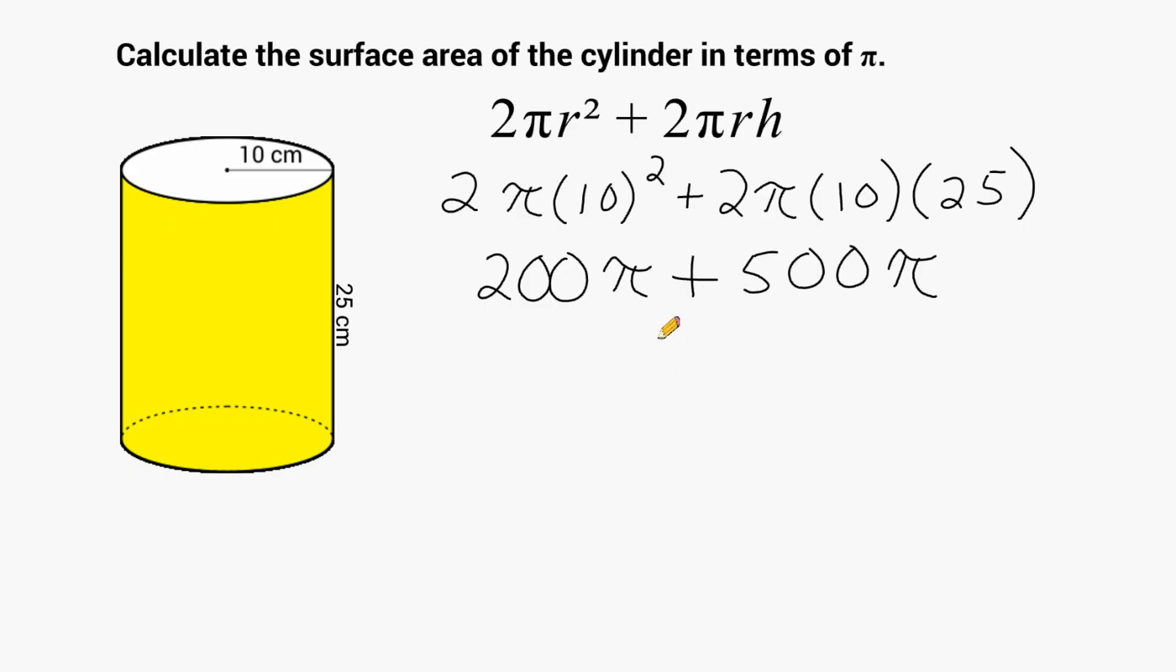And next, we can combine these two terms here by adding 200 pi and 500 pi, which is 700 pi. So it was actually that simple. The surface area of the cylinder in terms of pi is 700 pi square centimeters.